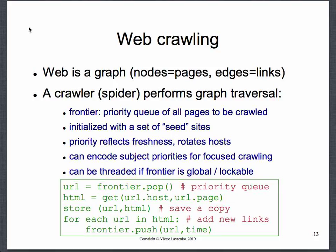What your spider or your crawler does is a traversal of this graph. You can traverse the graph in various ways, but in general when you write a crawler, what it typically looks like is: the central piece of a crawler is a priority queue, which is sometimes called a frontier.